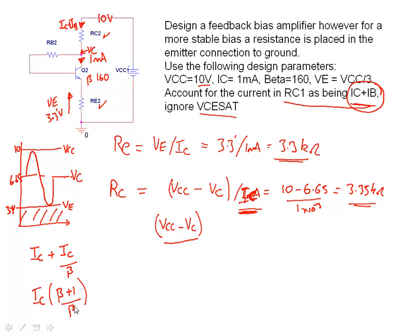times (beta plus 1) over beta. There we go, so there's our new equation for RC. And if we do that and put all the numbers in we're going to end up with something like this: 10 minus 6.65 all divided by 10 to the minus 3, 1 milliamp, multiplied by, well beta is 160 so that's 161 over 160.